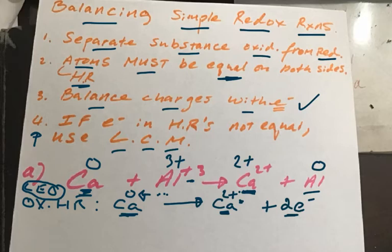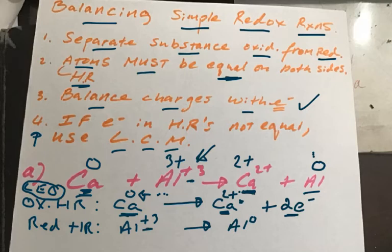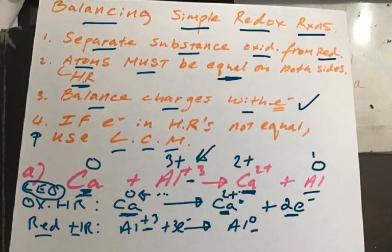Now let's write the reduction half reaction. We have Al³⁺ here, so write: Al³⁺ → Al(0). This time we have +3 on the reactant side and zero on the product side. So how many electrons do we need to balance this reduction half reaction? We're going to need three electrons. So we've successfully written our oxidation and reduction half reactions — now let's move on.